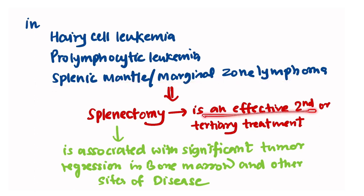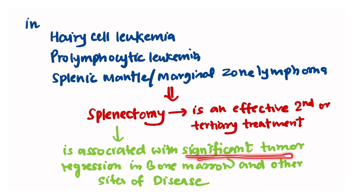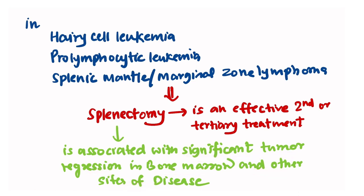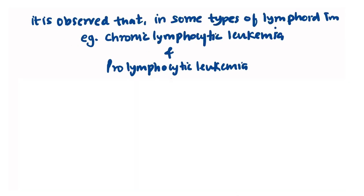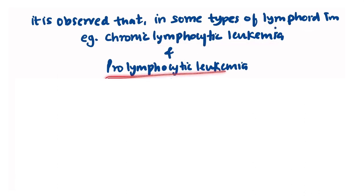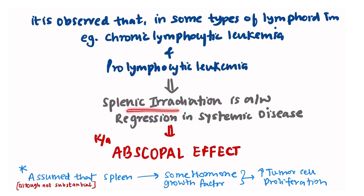Splenectomy in hairy cell leukemia and prolymphocytic leukemia patients is associated with significant tumor regression in bone marrow and other sites of the disease — meaning splenectomy leads to reduction or regression of tumor from distant sites. It is also observed that in some types of lymphoid tumors, such as chronic lymphocytic leukemia and prolymphocytic leukemias, splenic irradiation is associated with regression in systemic disease.